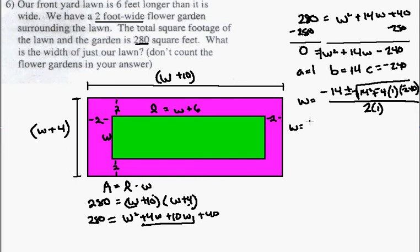We have w is equal to negative 14, plus or minus the square root. 14 squared, 14 squared is 196.